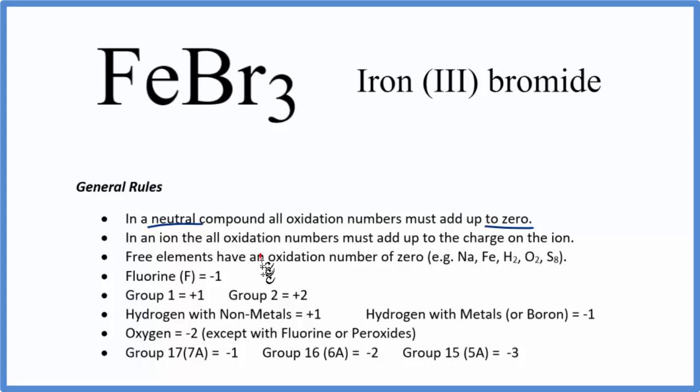But bromine, we look down at our rules here. Bromine is in group 17, sometimes called 7A. It will have an oxidation number of minus 1. So we'll put a minus 1 up here.